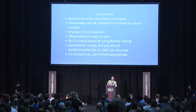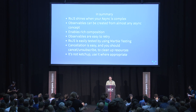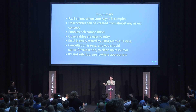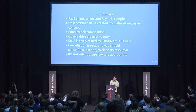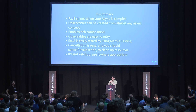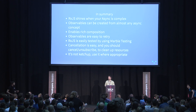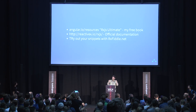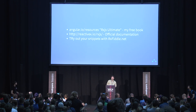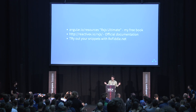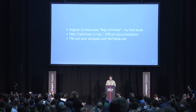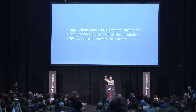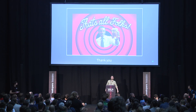In summary: RxJS shines when your async is complex. Observables can be created from almost any async concept and enable rich composition — mixing mouse events with async concepts. Observables are easy to retry, RxJS can be tested with marble testing, and cancellation with unsubscribe is easy — don't forget it. And please don't use it everywhere. For further reading: I have a free book at angular.io/resources called 'RxJS Ultimate'. There's also the official documentation and the awesome tool RxFiddle.net where you paste your RxJS code and see a visual representation.